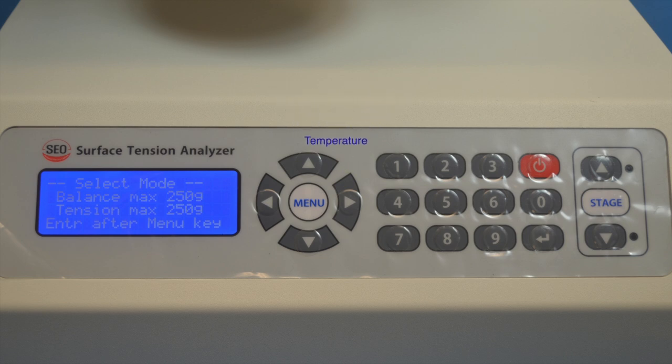The keyboard and display are quite normal and easy to understand. On the right-hand side is the controls for moving the stage up and down when you need to do it manually. You have a number pad.